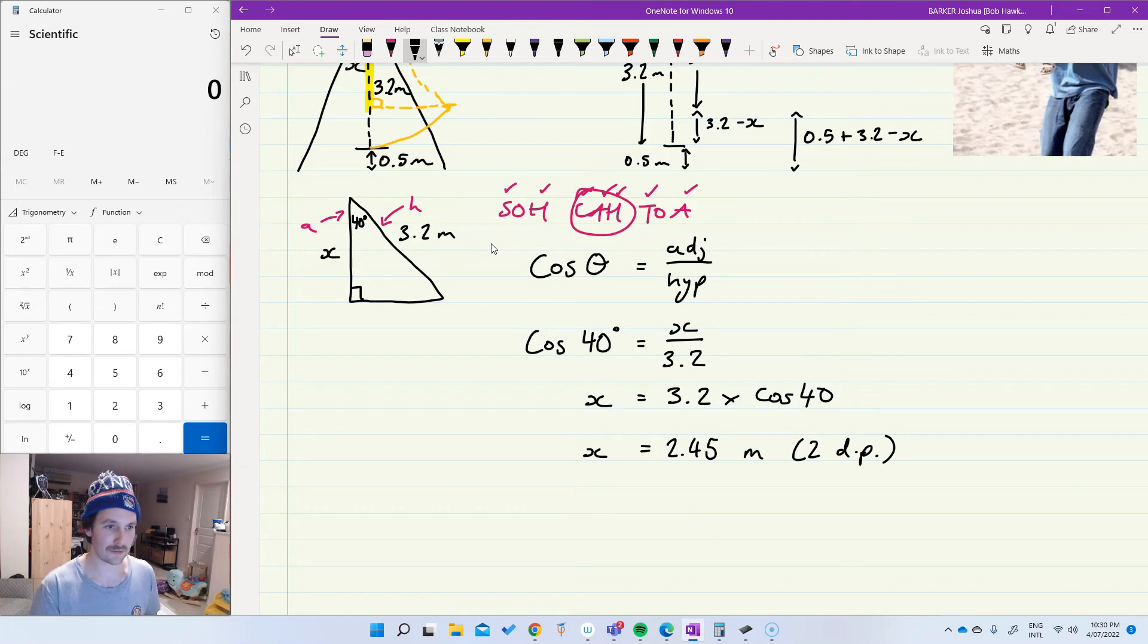Here's a good time to check your answer for reasonableness. Yeah, 40 degrees. We need our answer to be less than 3.2, 2.45 makes sense. It's less, but it's not a million times less. That seems about right to me. Okay.